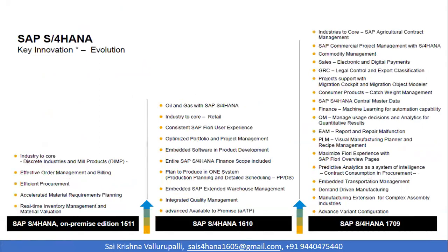The journey with S4 HANA started in November 2015 with the introduction of the S4 HANA on-premise edition. Most of the industry concepts were brought into the core version, and discrete industries and web products were the first to enter the core S4 HANA on-premise edition. Effective processes were included to make order management and billing proper, procurement more efficient, material requirement planning more accelerated, and it offered real-time inventory management and material valuation.